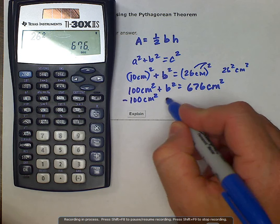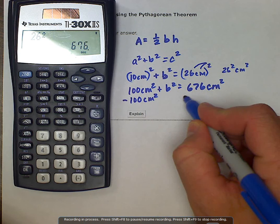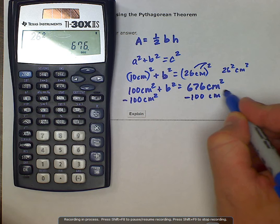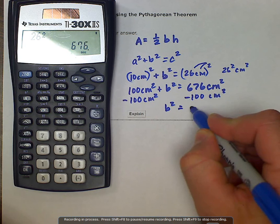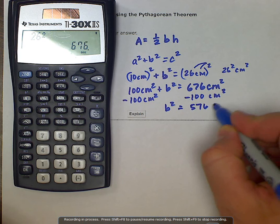And that leaves us, well, we have to do it to both sides so that we stay balanced here. This leaves us with b squared is equal to 576 centimeters squared.